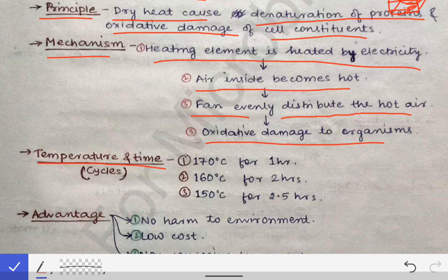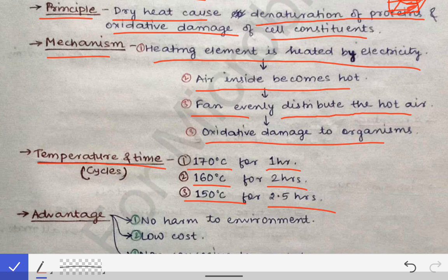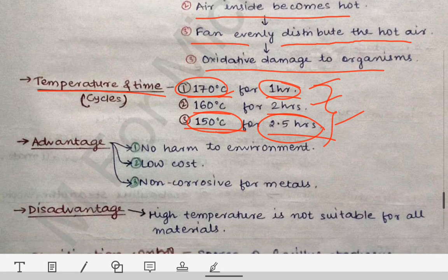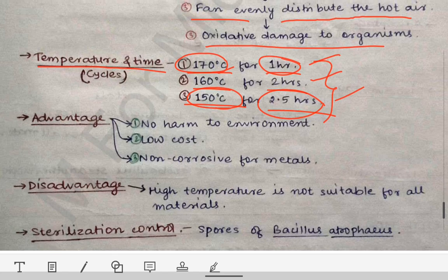For this sterilization technique, there are three cycles and any one can be used. If operating at 170°C, run for one hour. At 160°C, run for two hours. At 150°C, run for 2.5 hours. Any one of these three can be used — if you want to do it quickly, use 170°C for one hour; if you have more time, use 150°C for 2.5 hours.